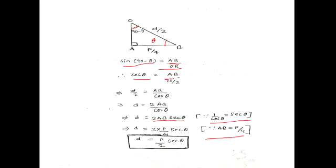So we get the final result: D is equal to P by 2 sec theta. For best wire size, D is equal to P by 2 sec theta.